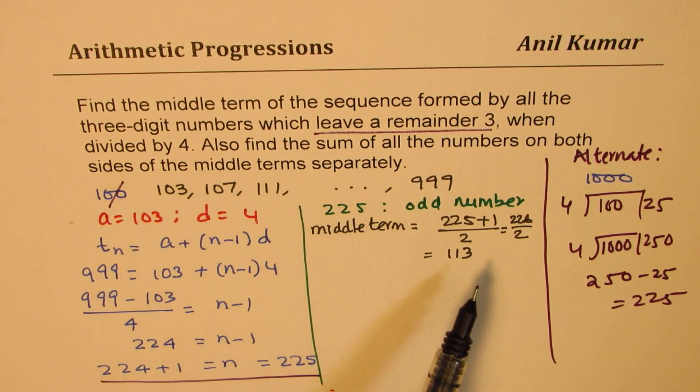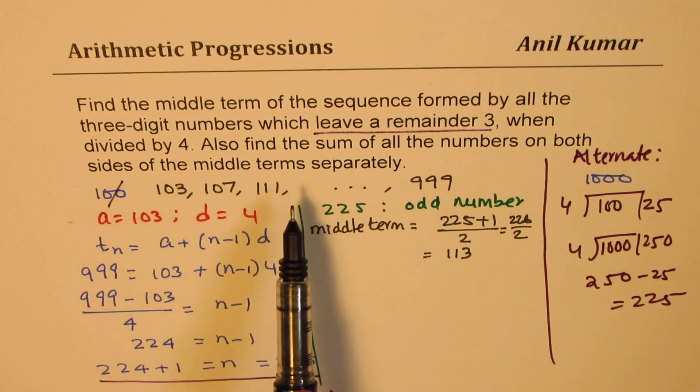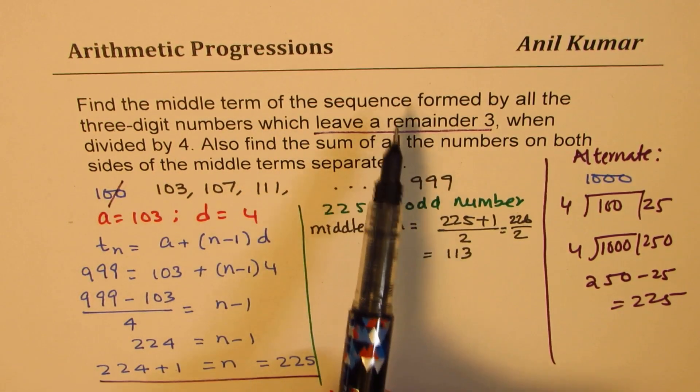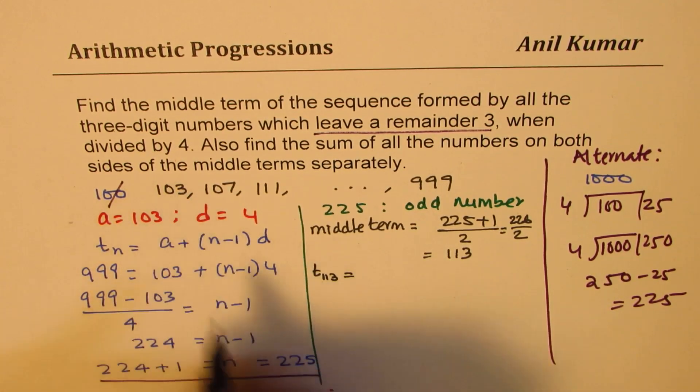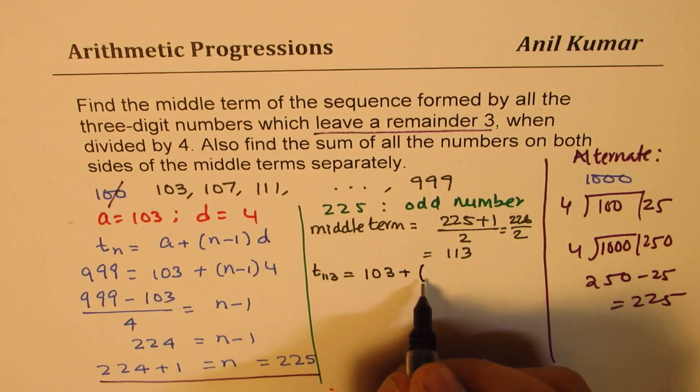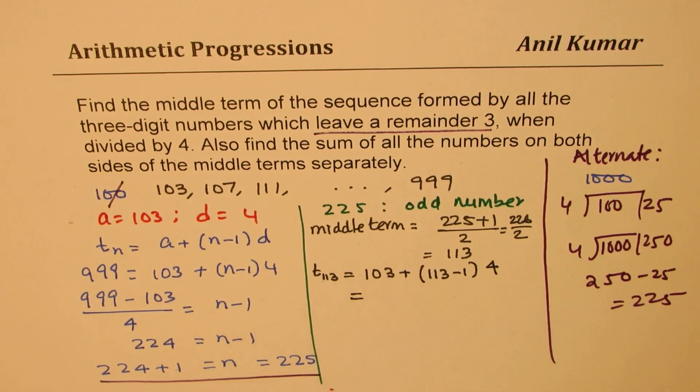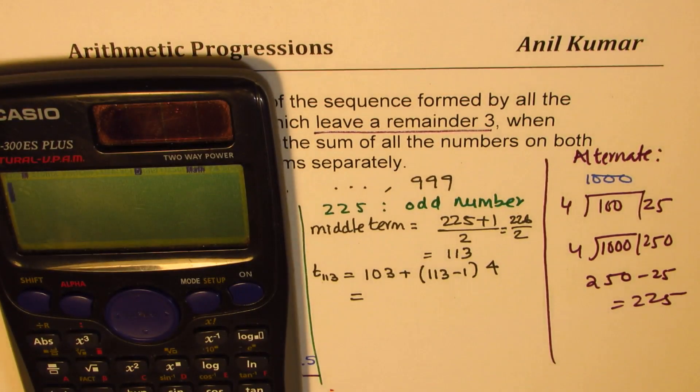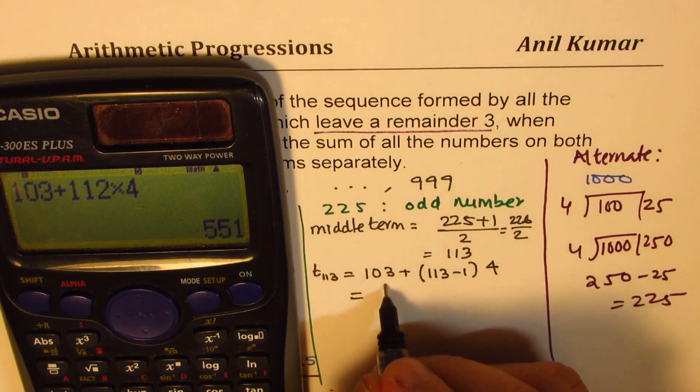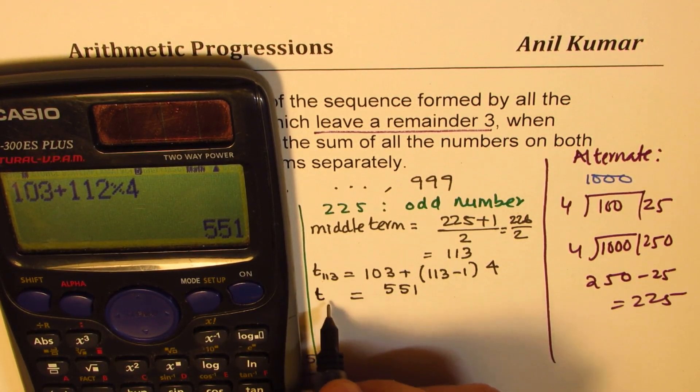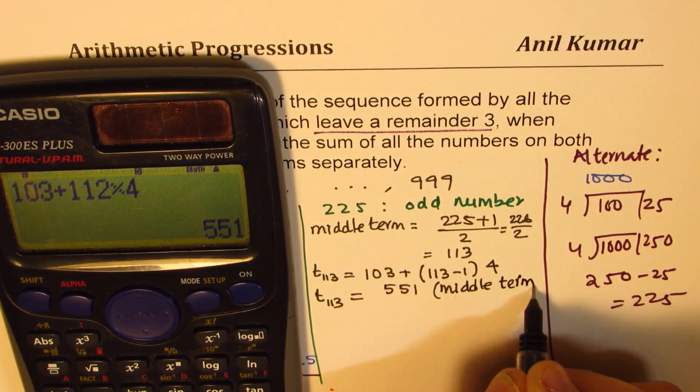Now, one part of this question is also find the sum of all the numbers on both sides. First, we have to find the middle term. So t113 will be, we'll substitute, now we know what a is. a is 103 plus term number 113 minus 1 times d which is 4. So let's use the calculator, find the answer. So we have 103 plus 112 times 4, so that gives you 551 as the middle term, perfect.